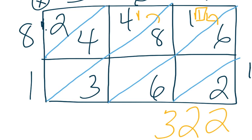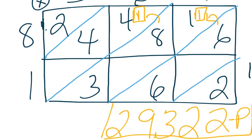Now I have to regroup another one up here. Then 4 and 1 is 9. And then I bring down my 2 because there's nothing else with it. So 29,322 is my final product.